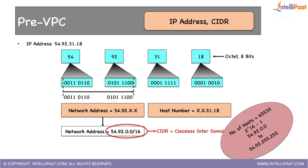CIDR notation also tells us how many bits in a particular IP address belong to the network. Our home network also has a network address. Everything from this point forward — IP address, network address, etc. — all pertains to the private network. The IP addresses mentioned here are all private IP addresses like 192.168.something.something.